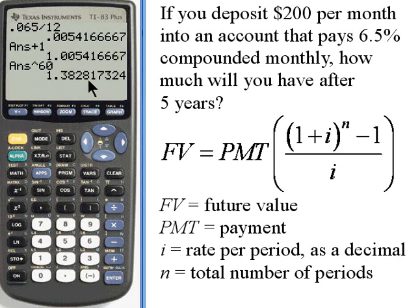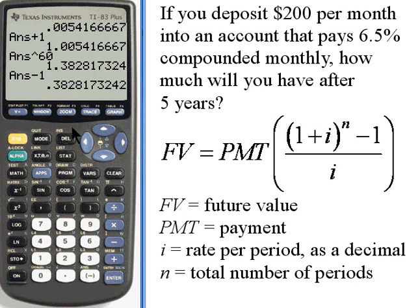Once we've got that, we want to subtract 1 from it. So I'll take that answer and subtract 1. And now once we've got that, I'm going to take that and divide it by i.